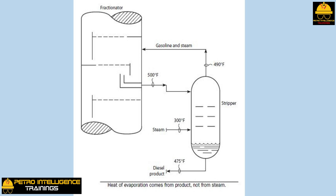We say the vapor in the vessel is at its dew point or saturation temperature. When steam is mixed with a liquid at its bubble point, the partial pressure of the vapor in contact with the liquid is reduced, and the liquid begins to boil. The lighter components of the liquid are turned into vapor and carried out of the stripper with the steam. If liquid drawn from a column cools below its bubble point due to ambient heat loss, we say it is subcooled. Mixing a small amount of steam with subcooled liquid will reduce the partial pressure of any vapor in contact with the liquid, but not enough to promote boiling.